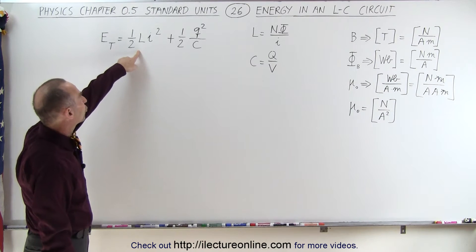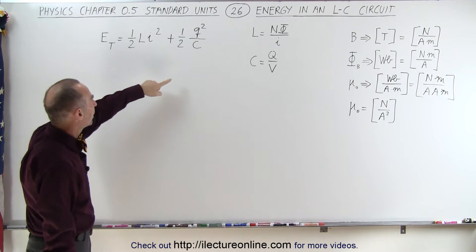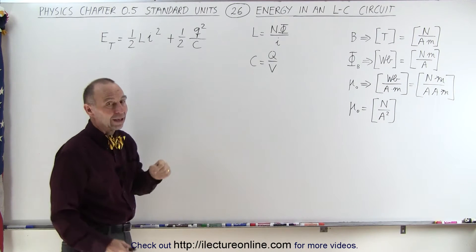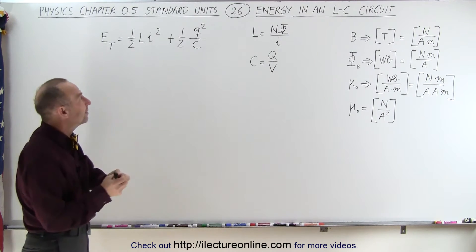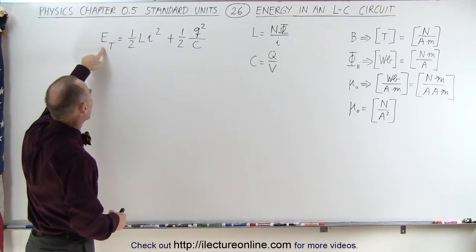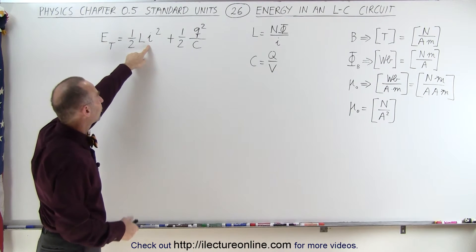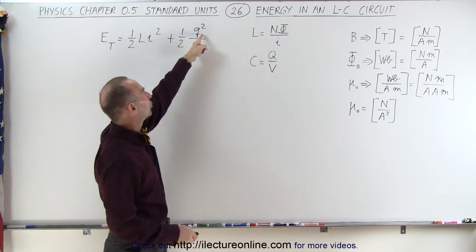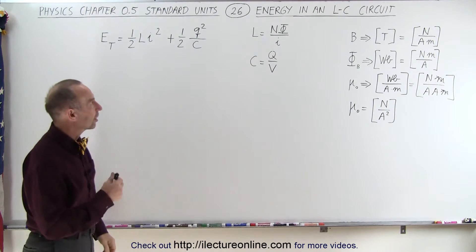So here's the energy stored in the inductor. There's the energy stored in the capacitor. The sum of the two at any moment in time is going to be equal to the total energy in the circuit. I is the instantaneous current, and Q is the instantaneous charge on the capacitor.